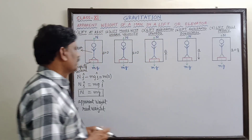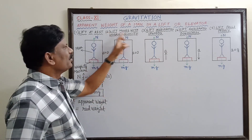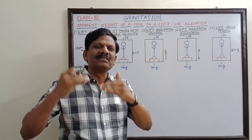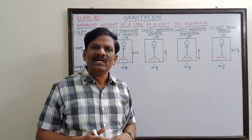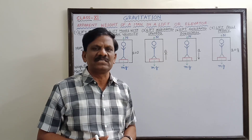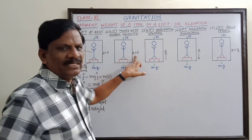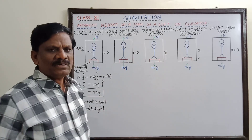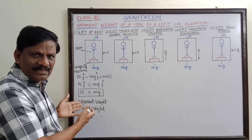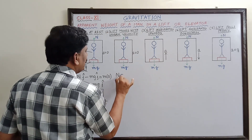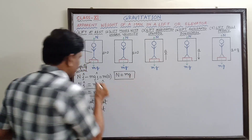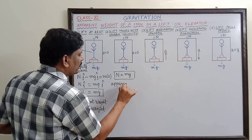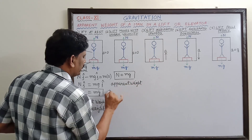Case two: the lift moves with uniform velocity, either upward or downward. Since both magnitude and direction are constant, it is called uniform velocity. In this case, since velocity is uniform or constant, acceleration is zero — the same as case one. Following the same derivation, N = mg. So here also, the apparent weight of the person is equal to his real weight.